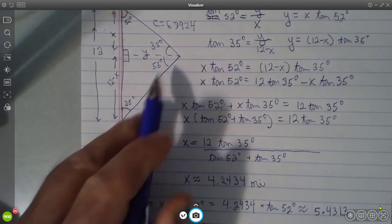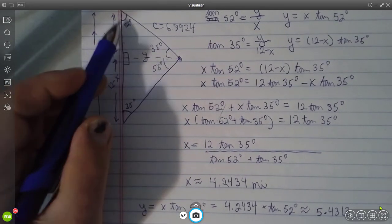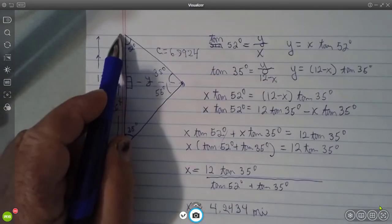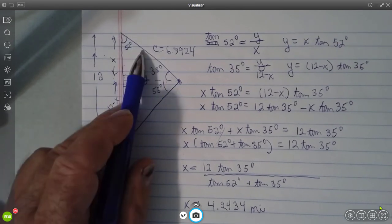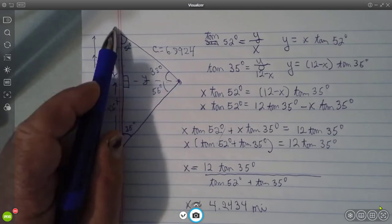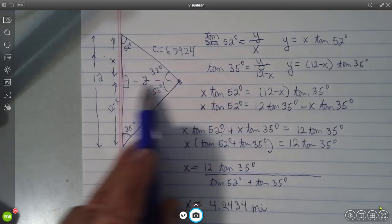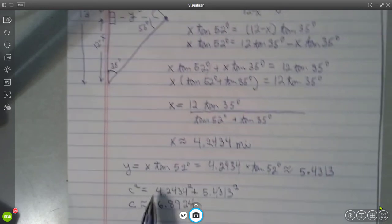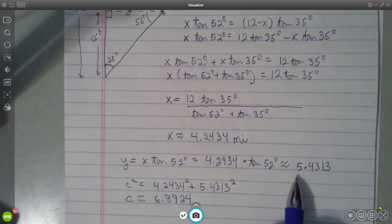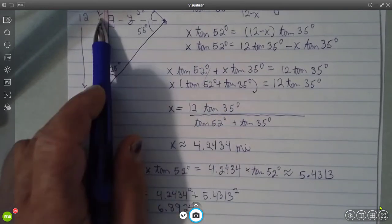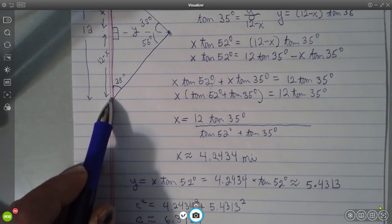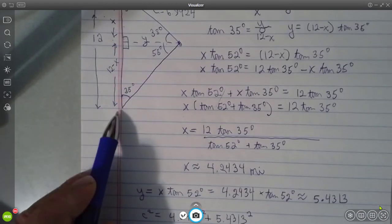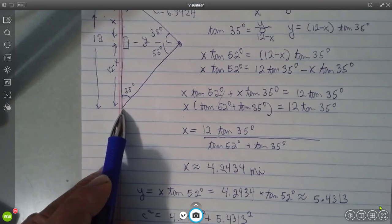So the ship in distress, we know that its bearing from the point of this plane is south, 52 degrees east, at a distance of 6.8924 miles. And that puts it y, which is 5.4313 miles offshore. And in the same way, we could take 12 minus x, which would give us the distance down the shore from the point where the southern plane received the signal.